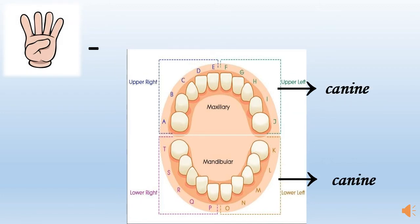After the first molars, we have the canines — those sharp teeth with a pointed edge. After the first molar, it's the canine, and again the upper canines erupt earlier than the lower canines on a general basis, but the reverse order is also a normal variation.